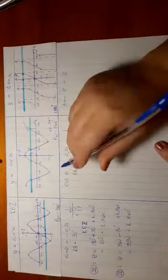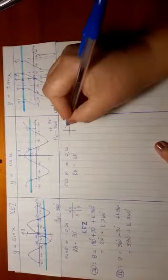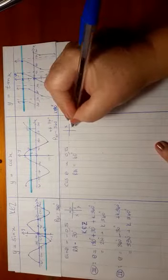Then I'm asking myself where is cos positive in the third, or first, and in the fourth quadrant.